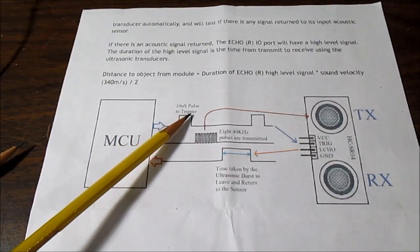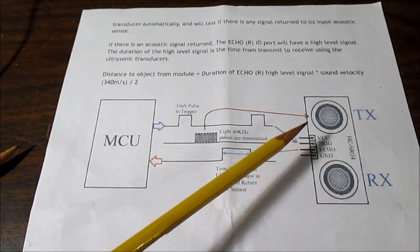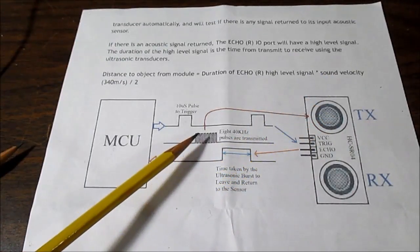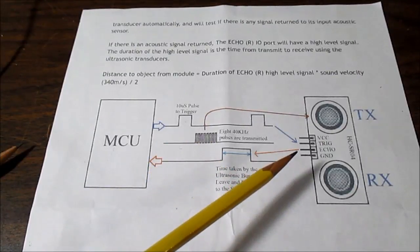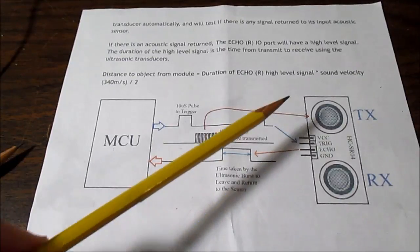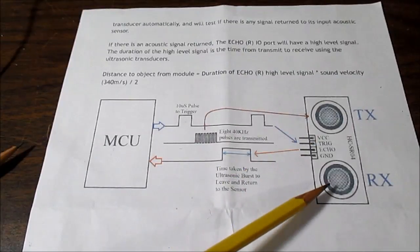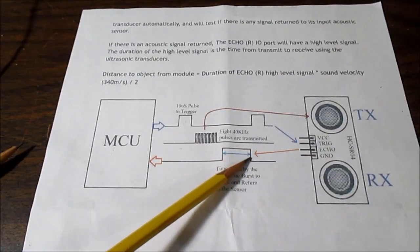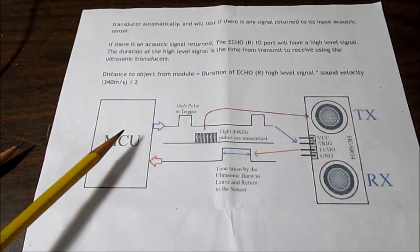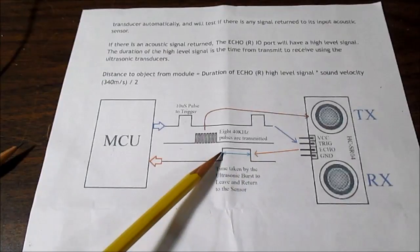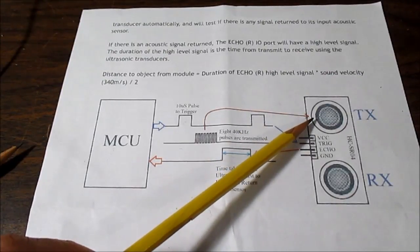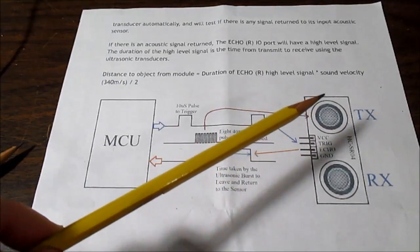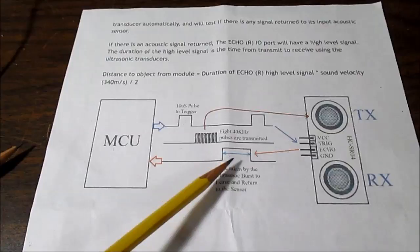You can have the microcontroller send out a 10 microsecond pulse. What that does is tell the device to send out an ultrasonic signal. It's 8, 40 kilohertz pulses transmitted. When it does that, it sets the echo pin high. So the signal goes out, bounces off of something, and returns to the receiver transducer. When it receives the signal, it goes low. The echo pin goes low. So what you can have the microcontroller do is measure how long that pulse is. Because if you have something nearby, it's going to bounce off and come back quick, and you'll have a shorter pulse. Whereas if you have something more distance, it's going to take longer and the pulse will stay high longer.